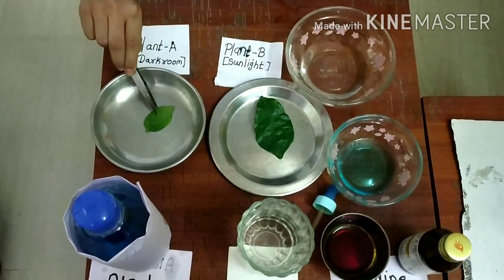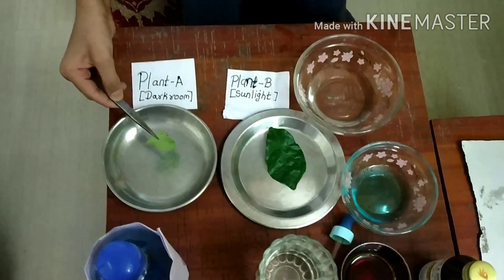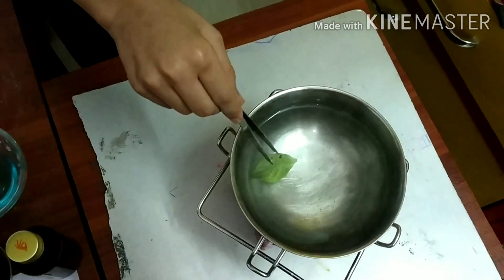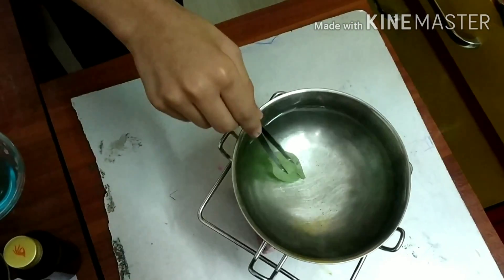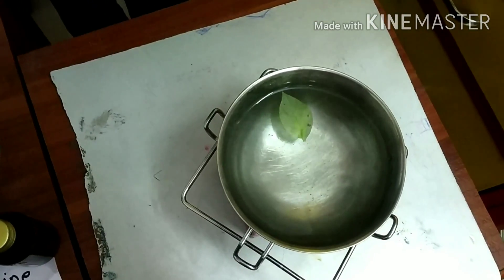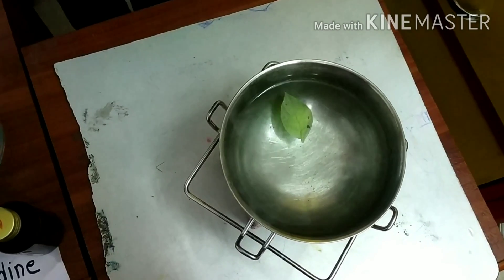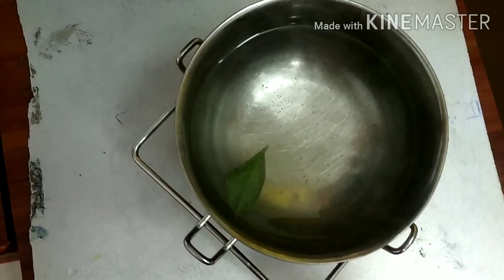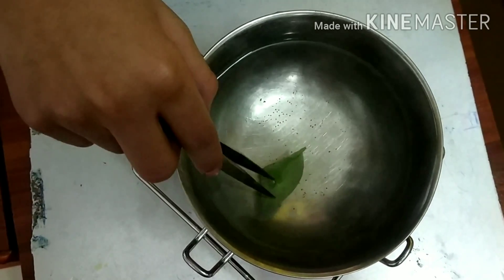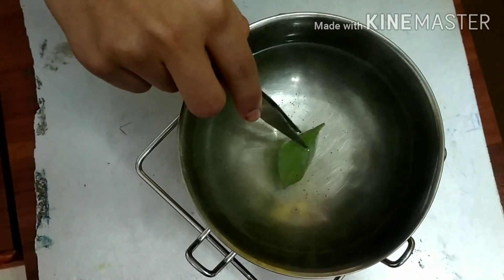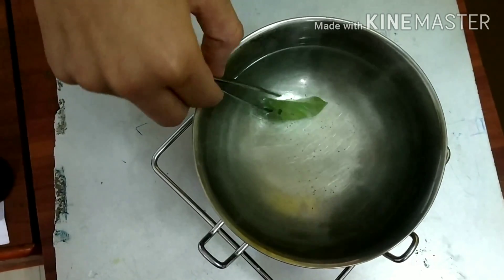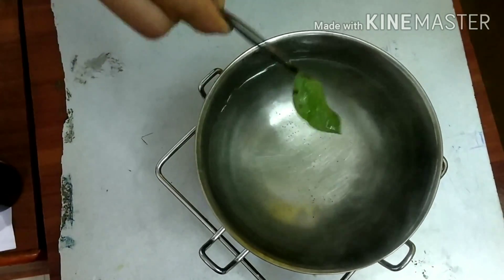Now let us do the activity. First, we will take Plant A from the dark room and boil it in water for some time like this. Now this leaf has boiled nicely, so we will take it out and dip it into the alcohol.